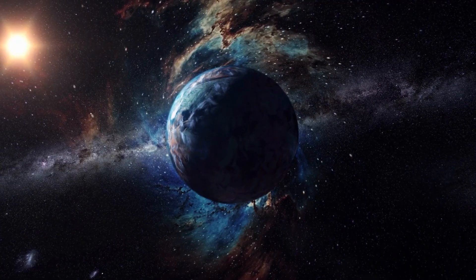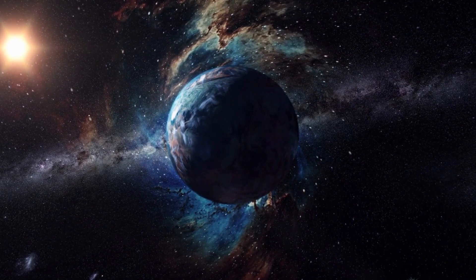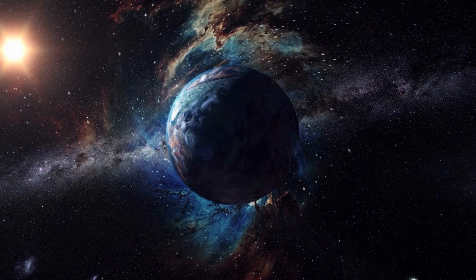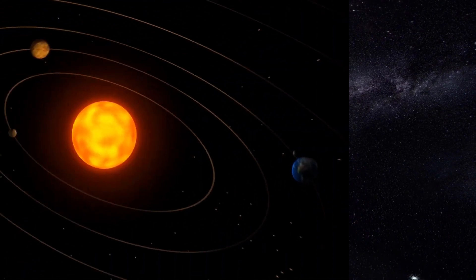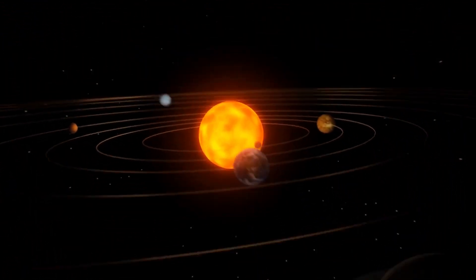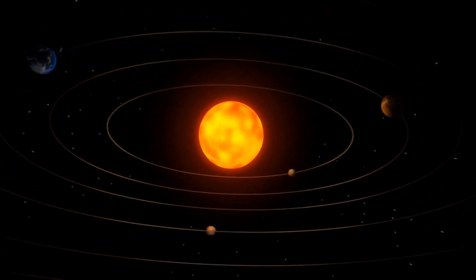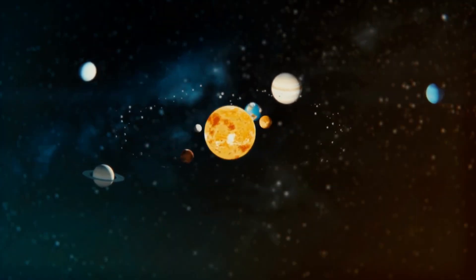To put things into perspective, Neptune is just 30 times further from the Sun than Earth. However, it's so massive that it holds more mass than all of the other planets in our solar system combined. Incredible, right? If you could travel at the speed of light, it would take you approximately 4 hours to reach this colossal planet. But until that day comes, we can only dream of what it would be like to explore the furthest reaches of our solar system.